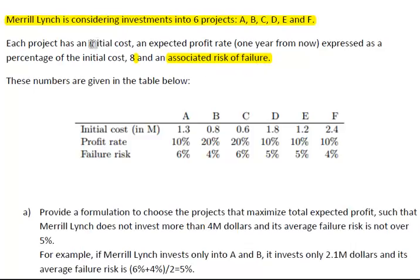We have cost, profit rate one year from now expressed as a percentage of the initial cost, and so on. Provide a formulation to choose the projects that maximize the total expected profit, such that Merrill Lynch does not invest more than four million dollars and its average failure risk is not over five percent.